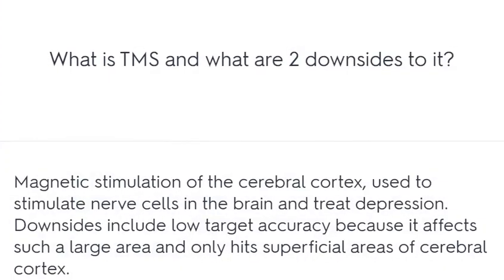What is TMS and what are two downsides to it? Magnetic stimulation of the cerebral cortex used to stimulate nerve cells in the brain and treat depression. Downsides include low target accuracy because it affects such a large area, and it only hits superficial areas of the cerebral cortex.